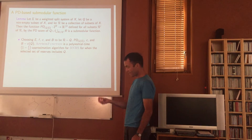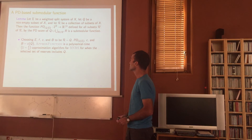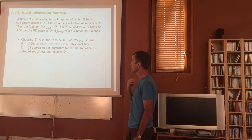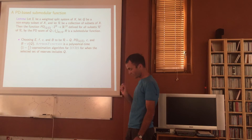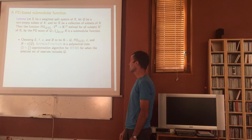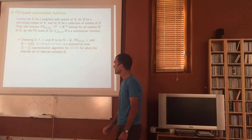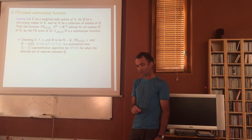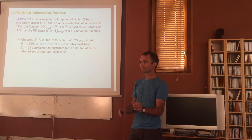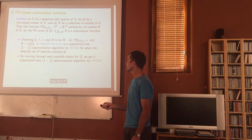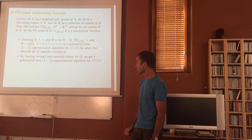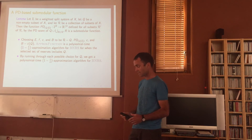In the general situation, I choose E to be R minus {Q}, use the PD score, the cost, and budget minus the cost of having Q. Applying the approximation algorithm gives a polynomial-time 1 − 1/e algorithm, but the set of reserves must include Q. To get around this, I run the algorithm for all choices of Q — one of those will give the optimal solution. Running through each possible choice of Q (each original region), we get a polynomial-time 1 − 1/e approximation for the reserve problem.